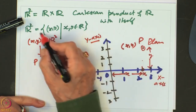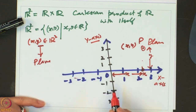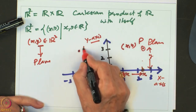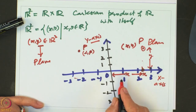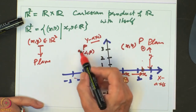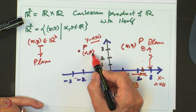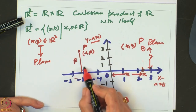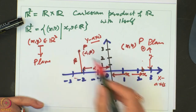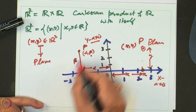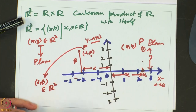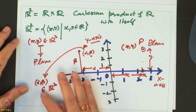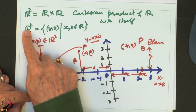From R2 to the plane, we have got a map, and this map is actually a correspondence. If I am given any point P with coordinates (alpha, beta), that means alpha is along the X axis and beta is along the Y axis. To reach this point, I move alpha units and then beta units. So every point in the plane gets associated with an ordered pair and every ordered pair gives rise to a point.